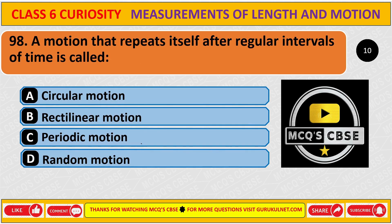A motion that repeats itself after a regular interval of time is called — the correct answer is C, periodic motion.